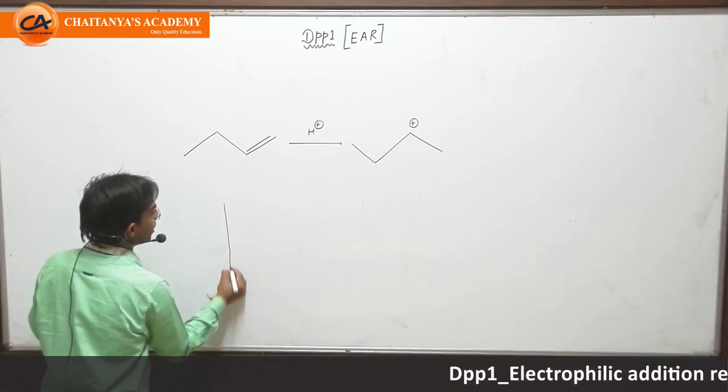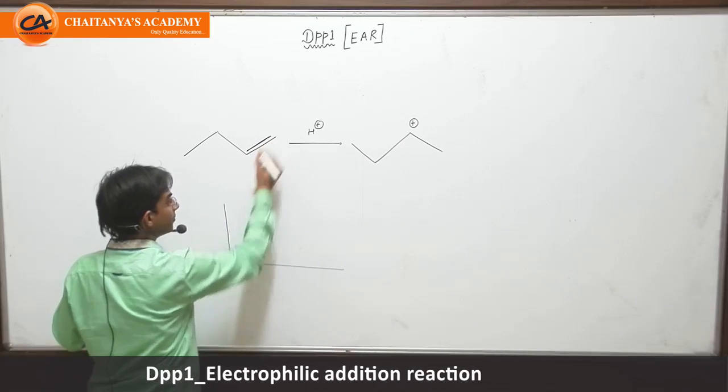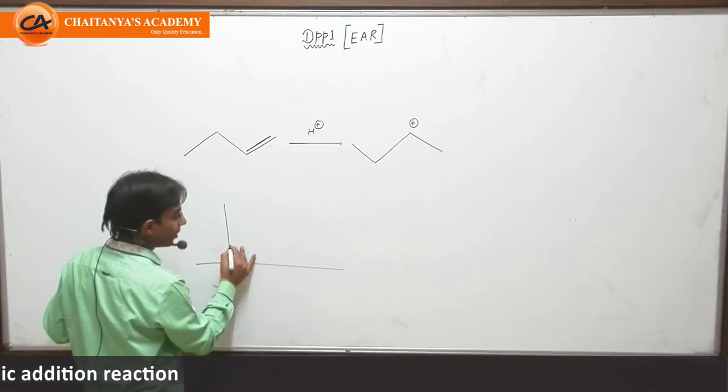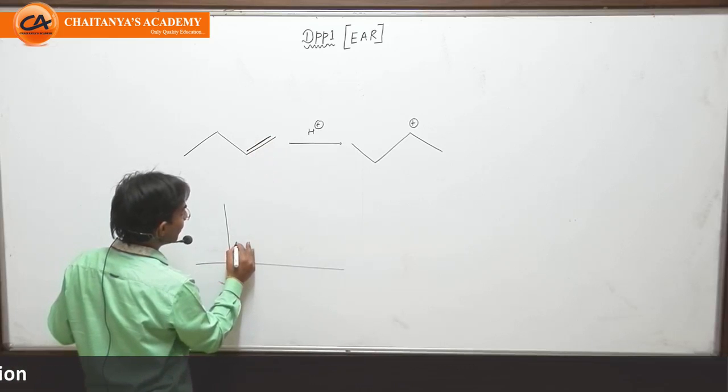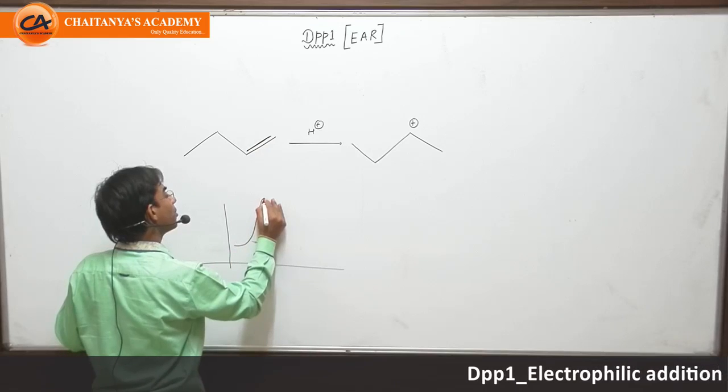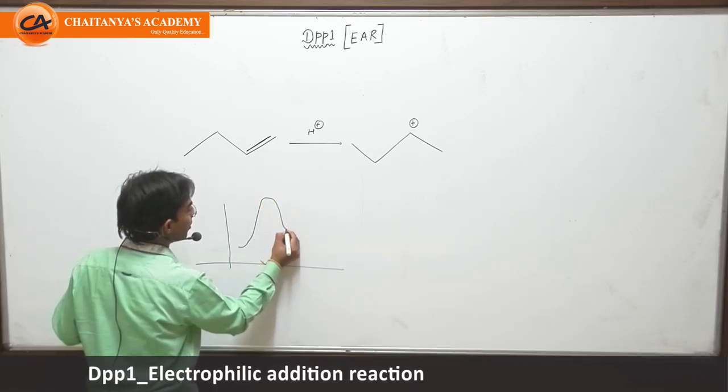Now students, for this process to happen, we know in this case bond breaking and bond formation both are happening. So the very first thing is this alkene and H plus is attacking, it will go through a transition state and generate an intermediate.